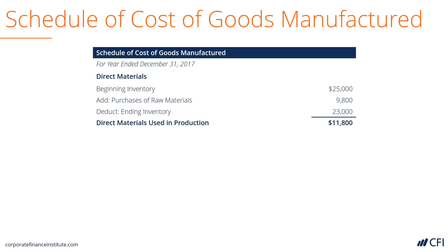Think of it this way: if the company wants to figure out how much it has spent in production, and it knows that it purchased 9,800 of raw materials, and it ends the period with less inventory than it started with, it must have spent more than 9,800. If it ended the period with more inventory than it started with, it would have spent less than the 9,800 purchased. That's the general concept with opening and ending inventory balances versus purchases.